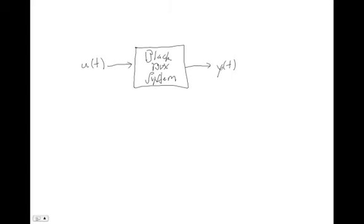For any given system, there aren't hard outputs because the output can change based on what you're interested in looking at. The inputs are relatively fixed because those are the things you have control over. In previous classes, systems you've considered have probably been of this form where you have one input and one output. In this class, we refer to those as single input, single output systems — SISO systems.